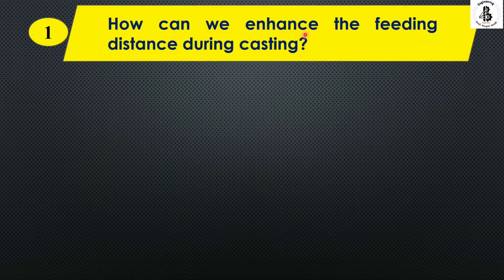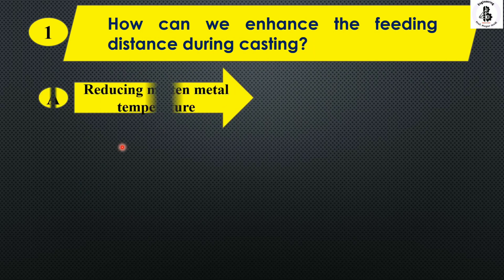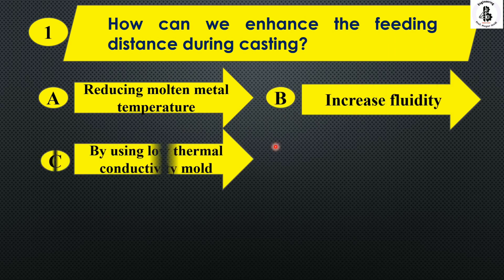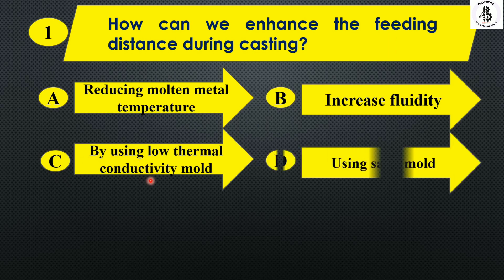How can we enhance the feeding distance during casting? Option A: reducing molten metal temperature. Option B: increase fluidity. Option C: by using low thermal conductivity mold. And Option D: using sand mold.